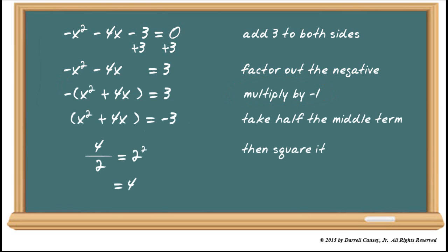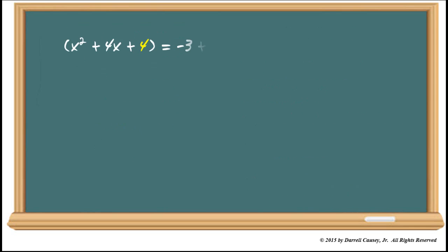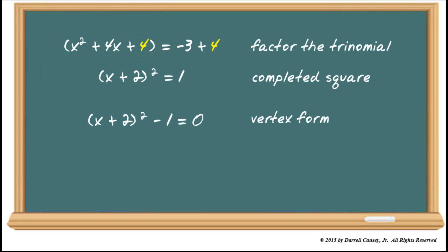Add 4 to both sides. And when we do that, we can then go ahead and factor the left side and, of course, combine the right side. And there's the square completed. Rewrite it in vertex form, and you have a very useful equation.